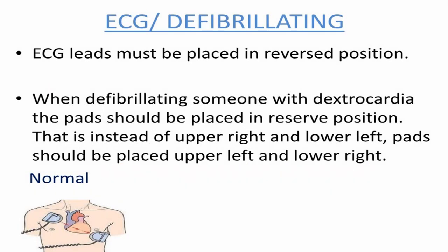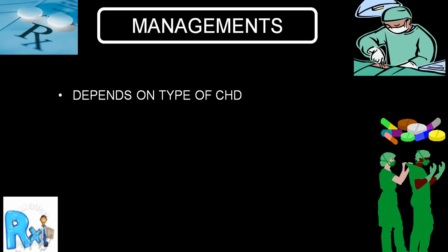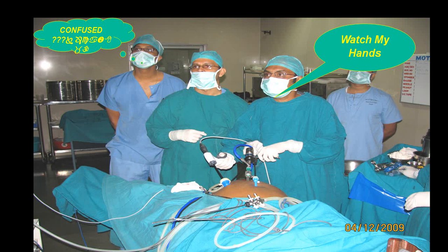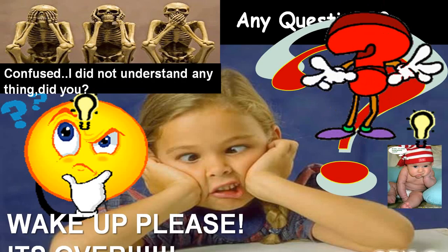This is important: if a person is having dextrocardia, during defibrillation the pad position should be reversed to get better results. As far as management is concerned, if there is no congenital heart disease no treatment is required, but treatment varies depending on the congenital heart disease present. For surgeons, if there is situs inversus the organ positions must be remembered and surgery done accordingly. The patient should always be informed prior to surgery about whether they have dextrocardia with situs inversus, situs solitus, or situs ambiguus/heterotaxy.